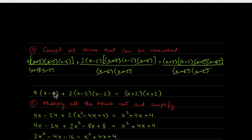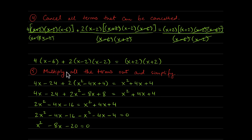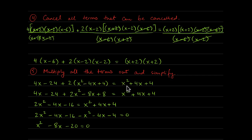What remains: 4 times x minus 6 on the left, 2 times x minus 2 times x minus 2 in the middle, and x plus 2 times x plus 2 on the right. Distributing the 4 gives 4x minus 24. The middle uses the square of a difference formula giving x squared minus 4x plus 4, then multiplied by 2. The right side is the same formula with a plus sign: x squared plus 4x plus 4.